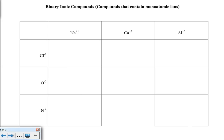Putting this into practice, we're going to write the formulas for binary ionic compounds. Binary means 2, so these are compounds that contain 2 monoatomic ions. Starting with sodium and chloride ion: Na⁺¹ and Cl⁻¹. When I do the crisscross method, I see that I just need one of each, so we have NaCl as our final formula. We would write the name of this as sodium chloride.